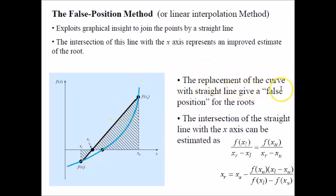The replacement of the curve with a straight line - originally you have a curve here, this blue curve. When you replace this blue curve with a straight line, it actually gives you a false position for the root. This point here, which intersects with the correct original curve of the function, this point here is the real true root. And this point xr here is just your estimation of the root.